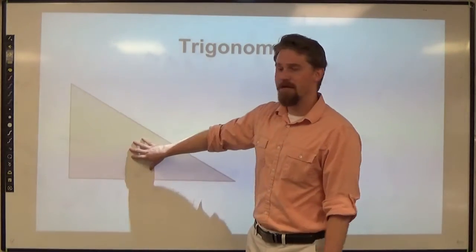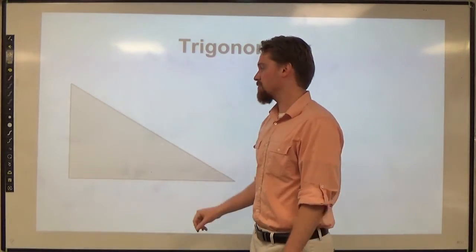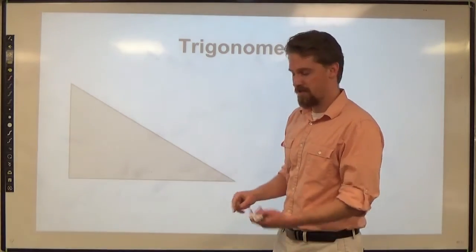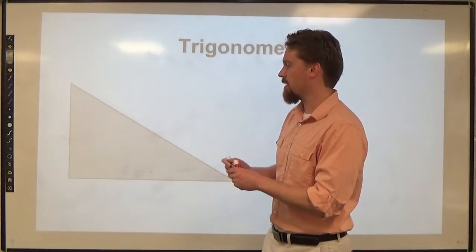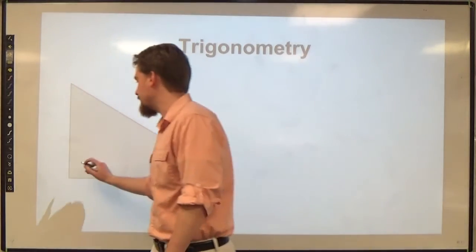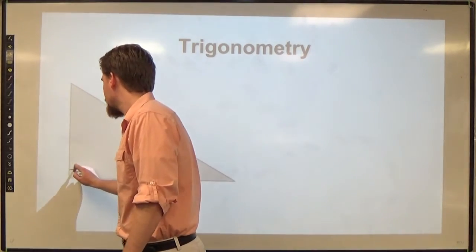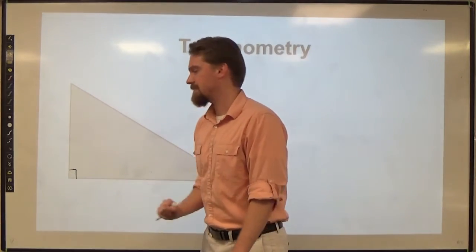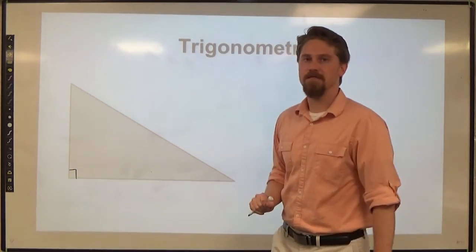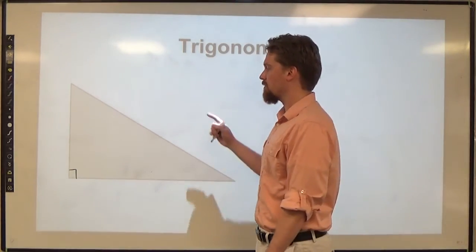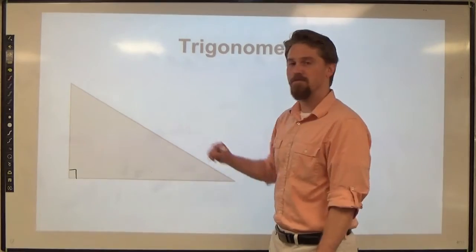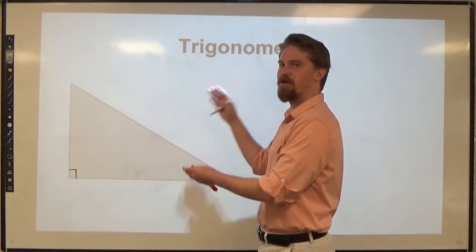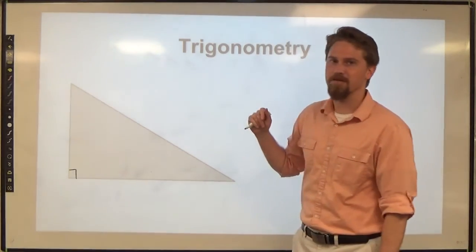Here's a triangle. This is the basis of trigonometry. It is a special kind of triangle — it is a right triangle, meaning it has a right angle. That angle is 90 degrees. That's what we're going to base most of trigonometry off, and then generalize stuff from there.